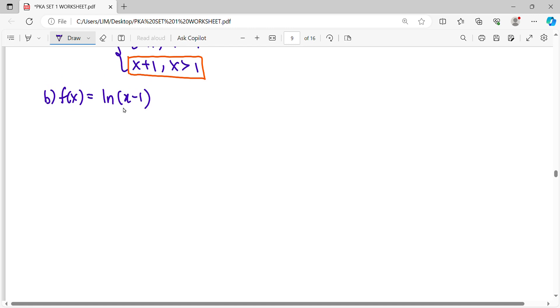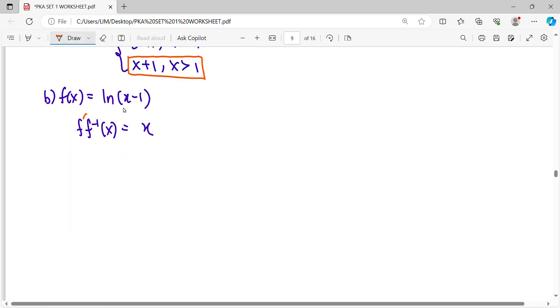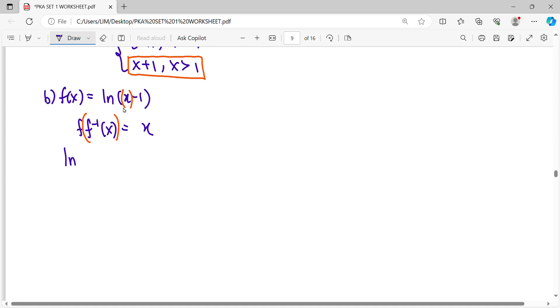Same concept when we find f inverse means f of f inverse equals to x. So how we're doing this means we're going to substitute the x with f inverse. So here we have ln, then f inverse of x minus 1 equals to x.